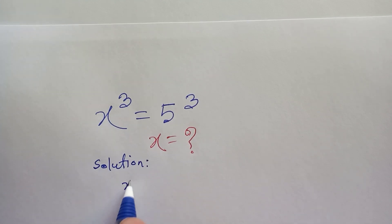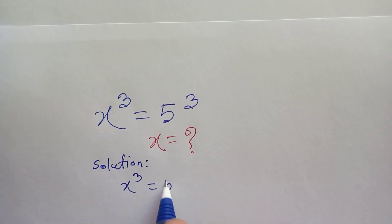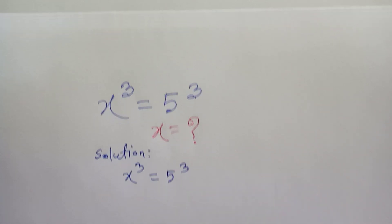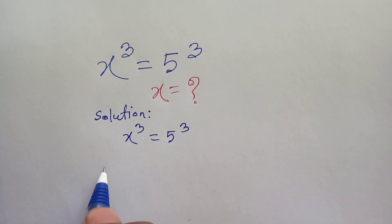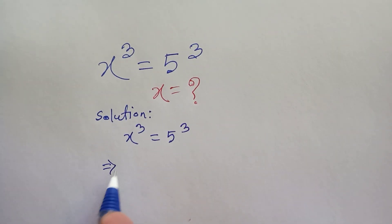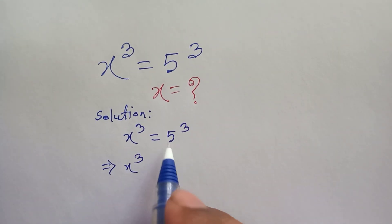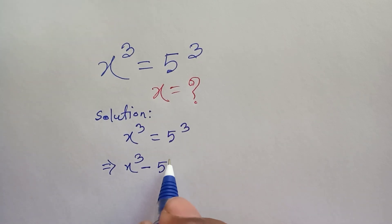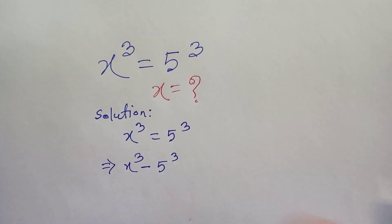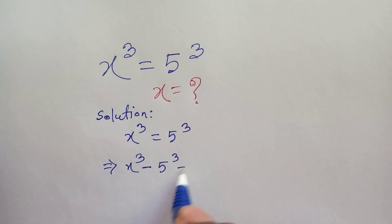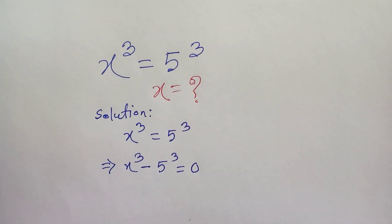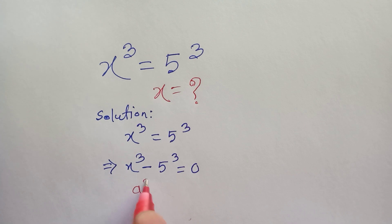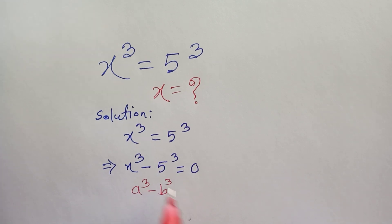We have given x to the power 3 is equal to 5 to the power 3. Now x to the power 3 moves to the left side, so it will be x cubed minus 5 cubed is equal to 0.